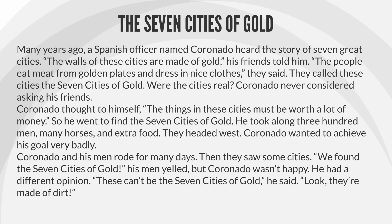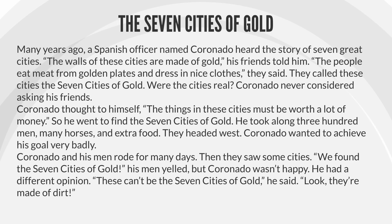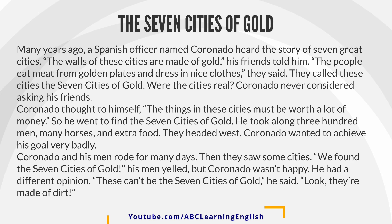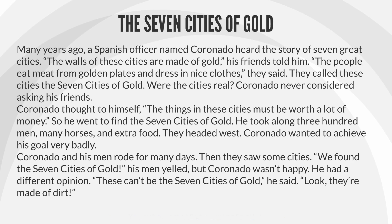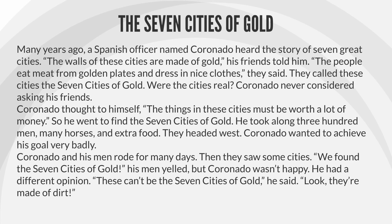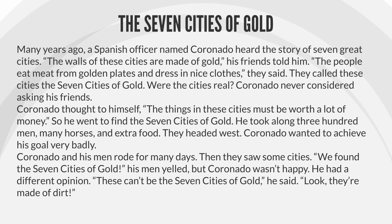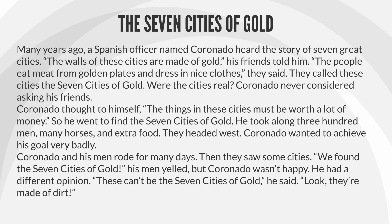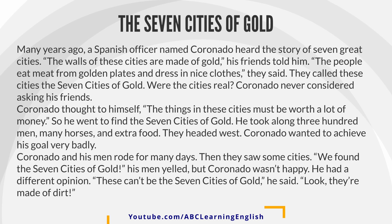He took along 300 men, many horses, and extra food. They headed west. Coronado wanted to achieve his goal very badly. Coronado and his men rode for many days. Then they saw some cities. We found the Seven Cities of Gold! his men yelled. But Coronado wasn't happy. He had a different opinion. These can't be the Seven Cities of Gold, he said. Look, they're made of dirt.